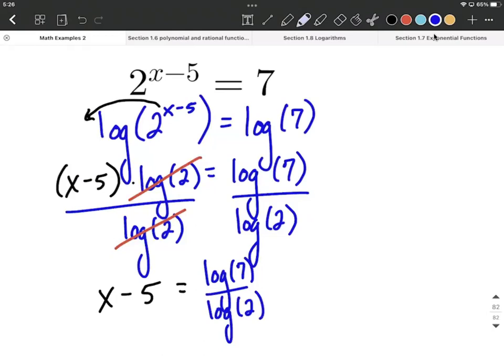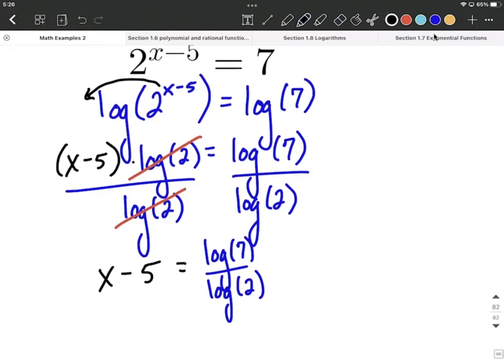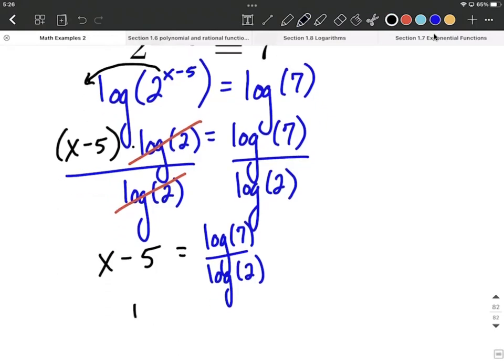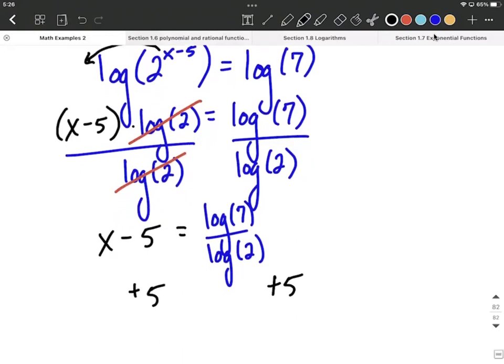Now make sure you don't rewrite that as log of 7 over 2. You have to have both a log in the numerator and a log in the denominator. To finish this one up and get x all by itself, we simply need to get rid of the 5, move it to the other side. It's being subtracted right now, so we're going to use addition to move that to the other side. This will put x on one side all by itself, and our final answer, an exact answer I might add, is log of 7 divided by log of 2 with a plus 5 tacked on the end.